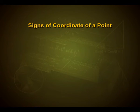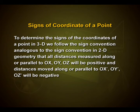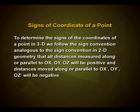Now let us study the signs of coordinates of a point. To determine the signs of the coordinates of a point in three dimensional space, we follow the sign convention analogous to that in two dimensional geometry: all distances measured along or parallel to Ox, Oy and Oz will be positive, and distances measured along or parallel to Ox', Oy' and Oz' will be negative.